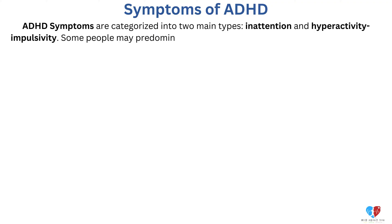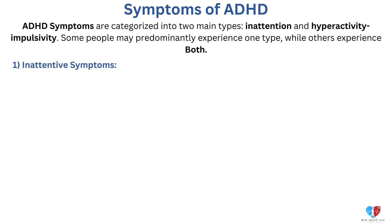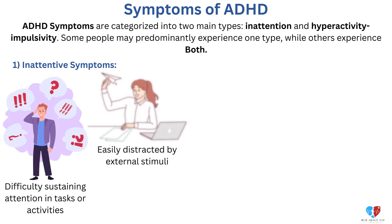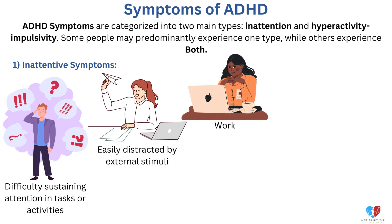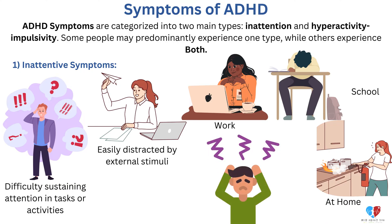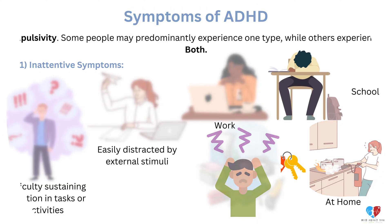Some people may predominantly experience one type, while others experience both. 1. Inattentive symptoms: Difficulty sustaining attention in tasks or activities. Easily distracted by external stimuli. Frequently making careless mistakes in work, school, or at home. Often losing things necessary for tasks, e.g., keys, school or office materials.